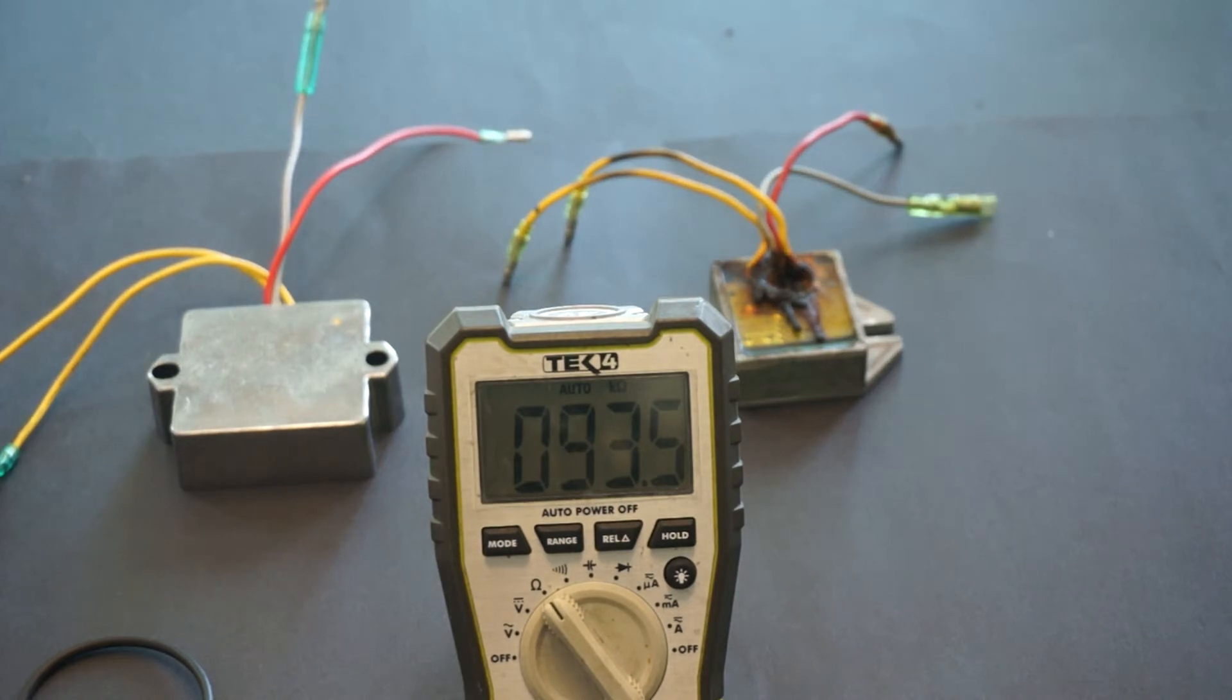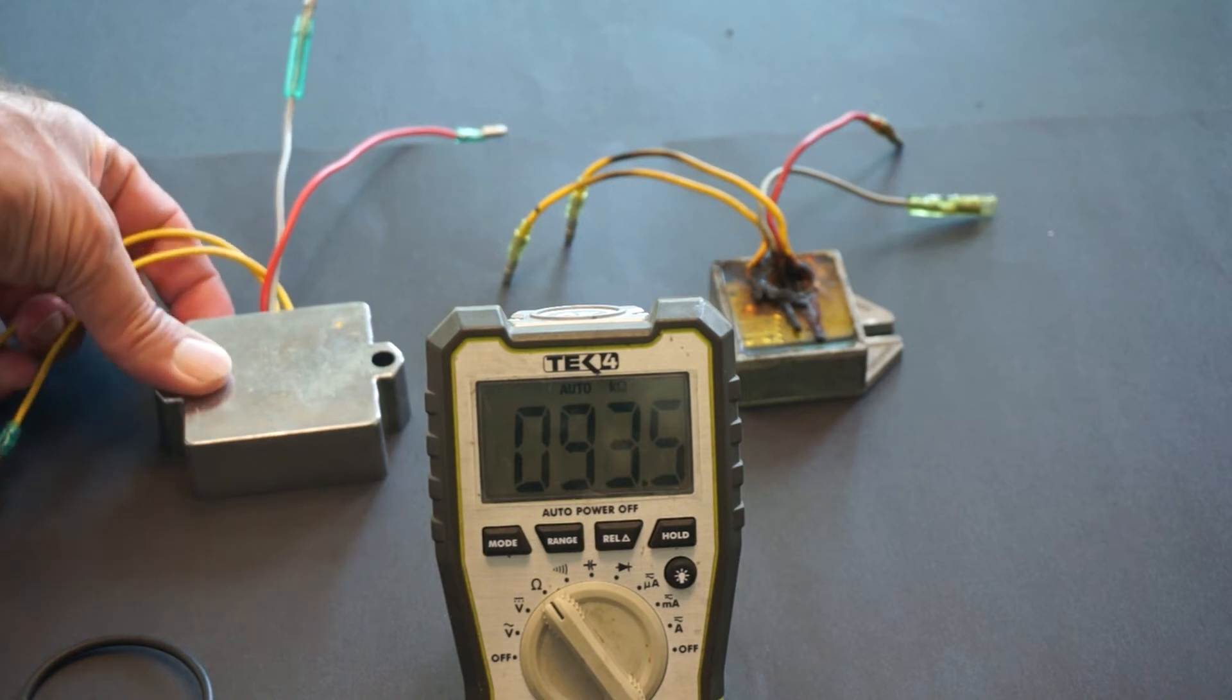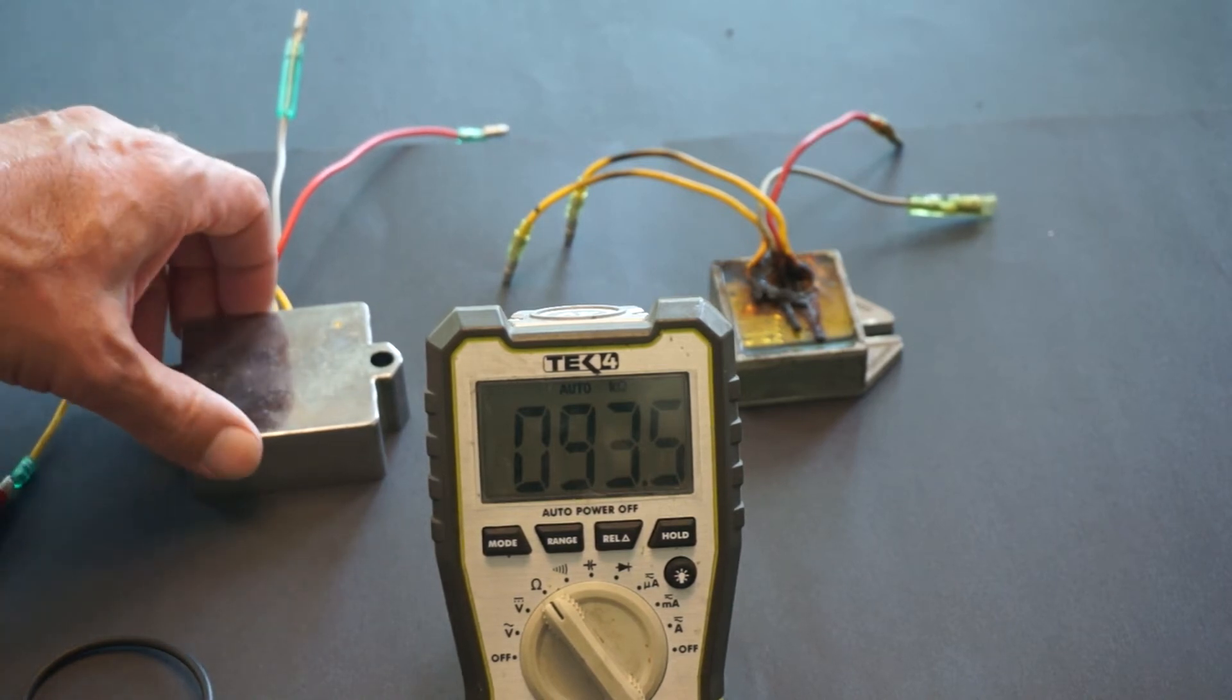So here we have 93.5 kilo ohms on the primary circuit of the rectifier.